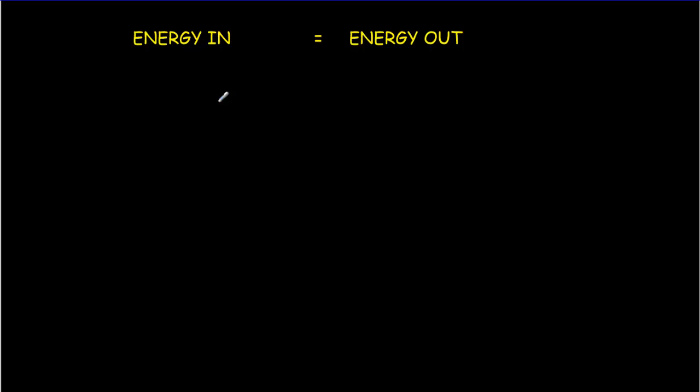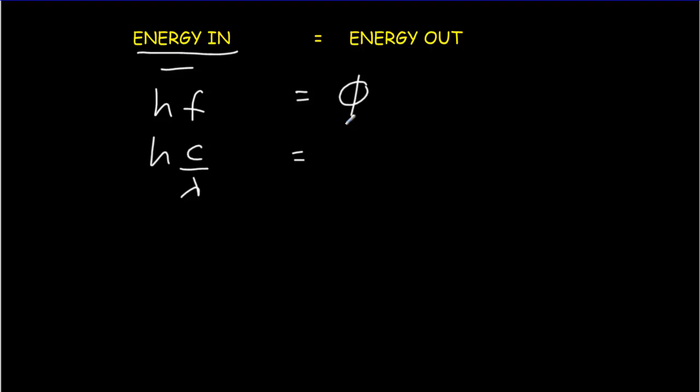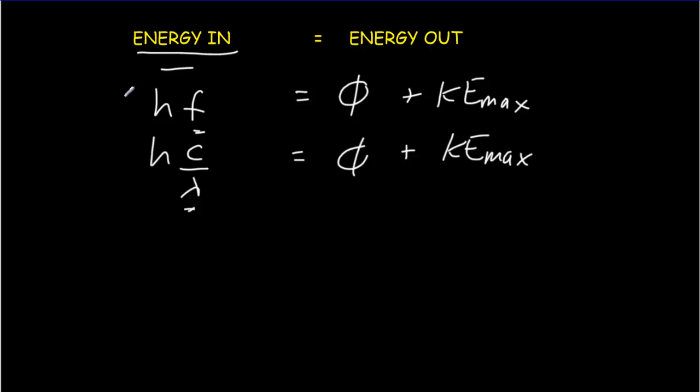There is an equation we call the photoelectric effect equation. The energy coming in is the photon energy: hf, or hc/λ if we know the wavelength. On the output side, we overcome the work function — that bonding energy — and any excess energy goes into the maximum kinetic energy of the electron. So: hf = φ + KE_max, or equivalently hc/λ = φ + KE_max. This is the photoelectric effect equation, used to solve a range of problems.